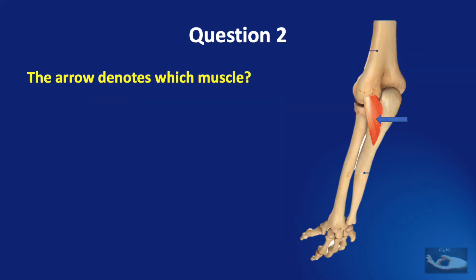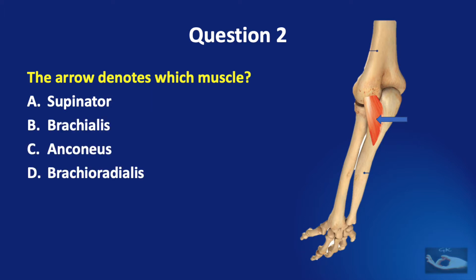Question number two. The arrow denotes which muscle? The supinator, the brachialis, the anconeus, or the brachioradialis?